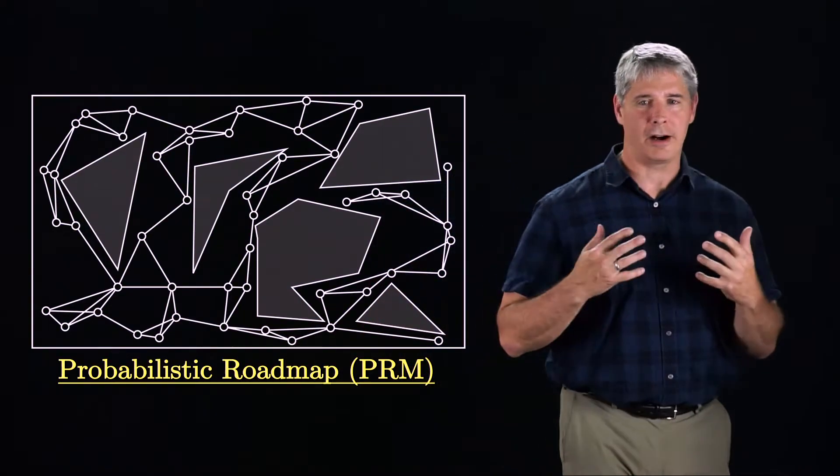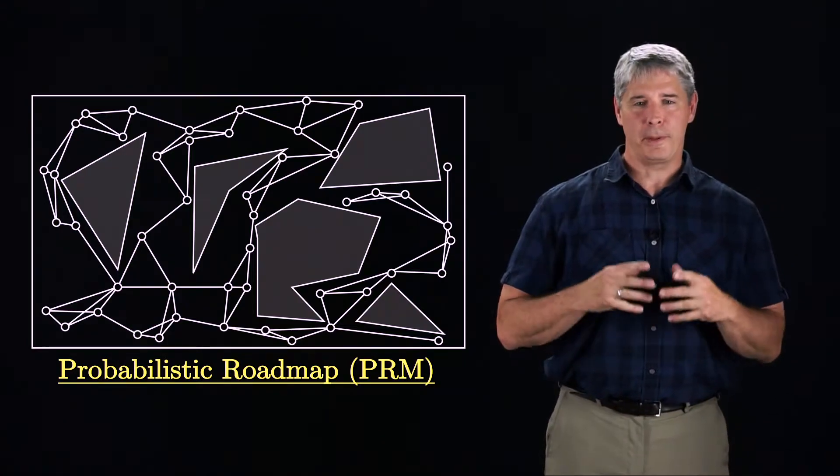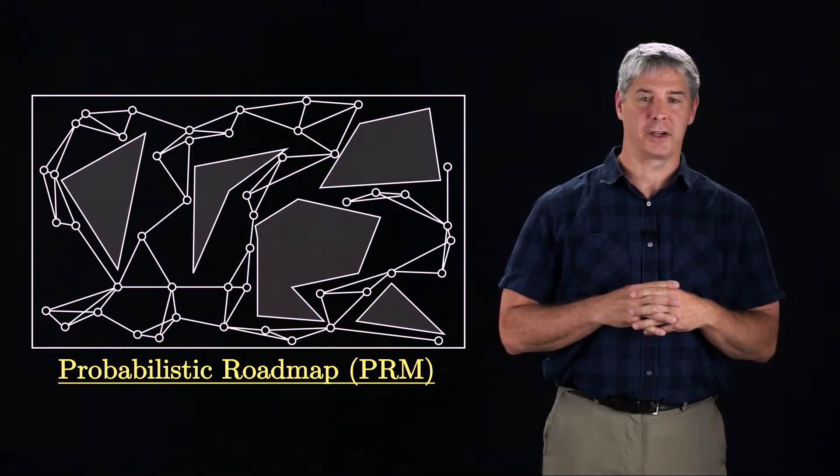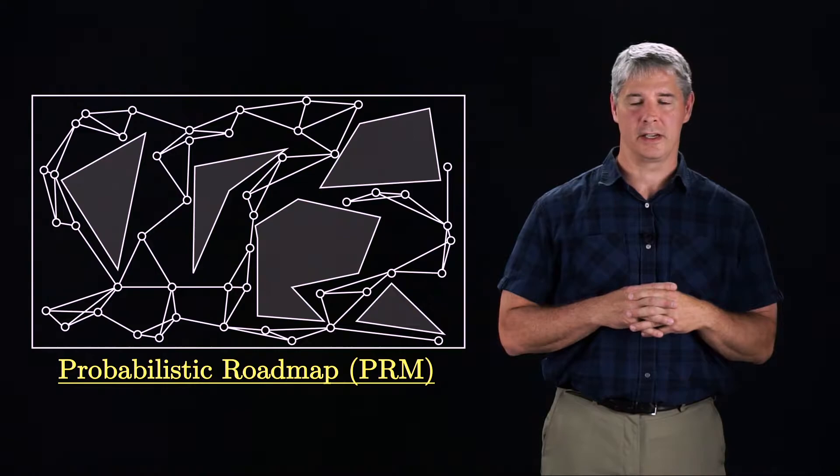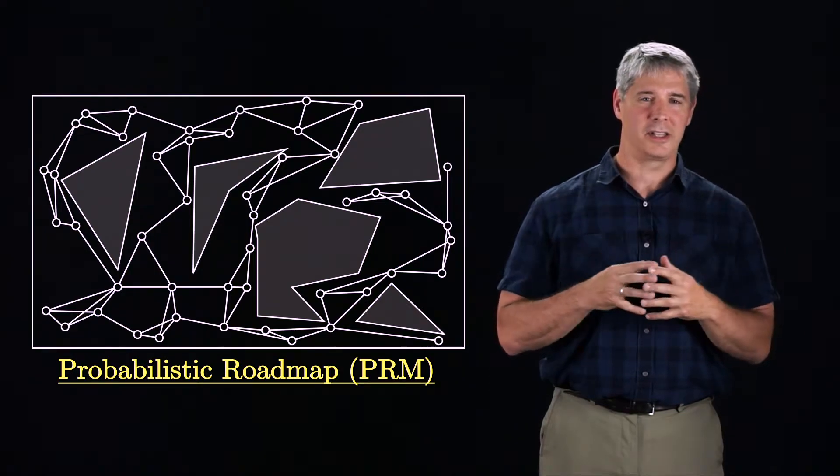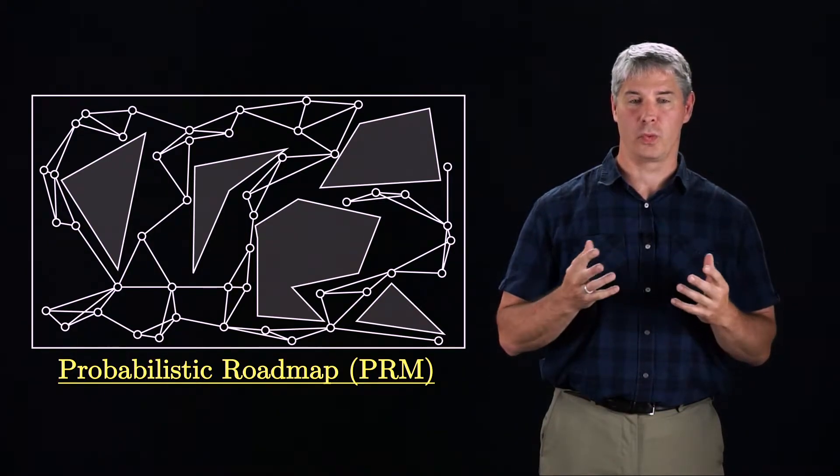One type of approximate roadmap is the probabilistic roadmap, or PRM for short. The PRM is constructed from a set of configurations sampled from the C space, and it can be called a probabilistic roadmap because, as the number of samples tends to infinity, the likelihood that the graph is a true roadmap goes to 100%.